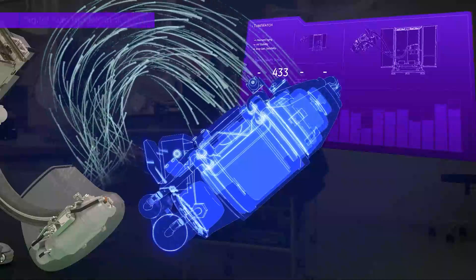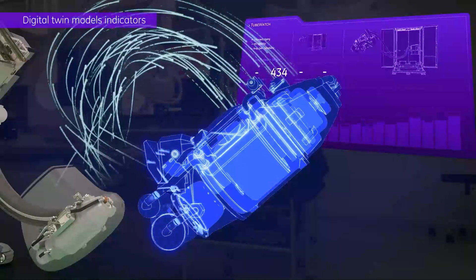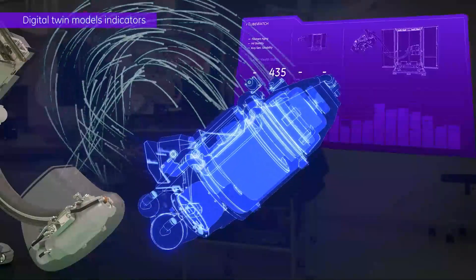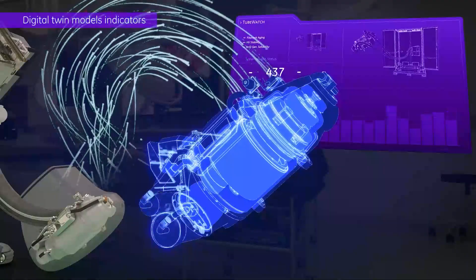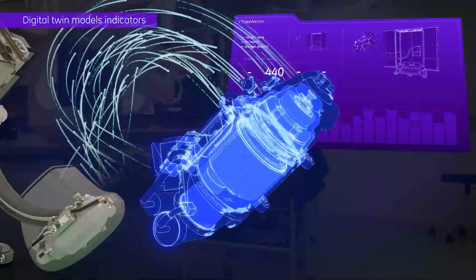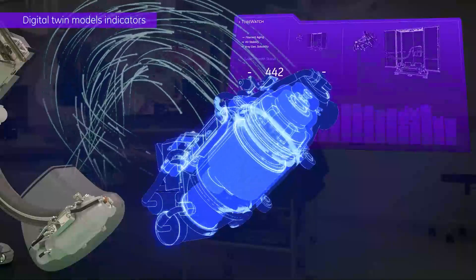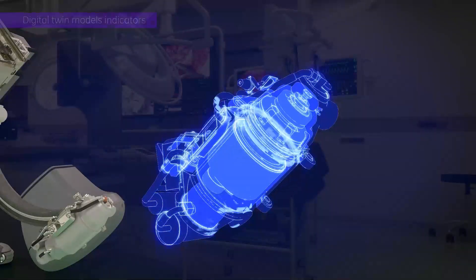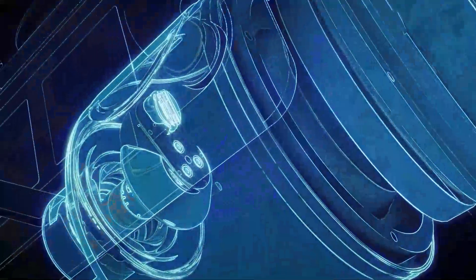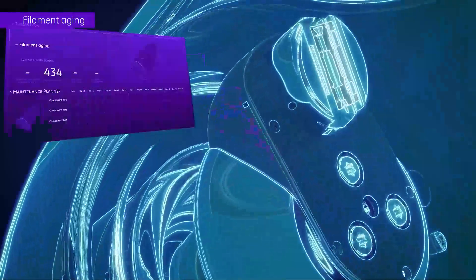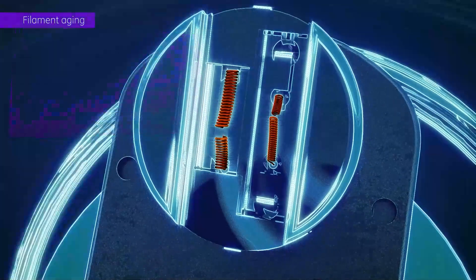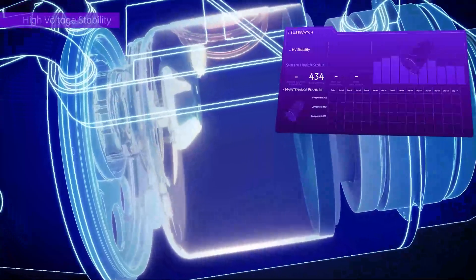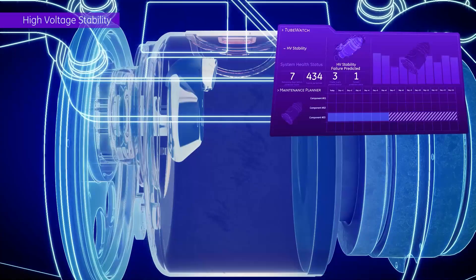This digital twin technology enables us to predict disruptive events before they occur. The TubeWatch algorithm is engineered to monitor key health indicators of your x-ray generation chain, including the tube, to predict when it's potentially going to fail. Each of the main components has their digital twin, such as filament aging, insert, and high voltage stability.